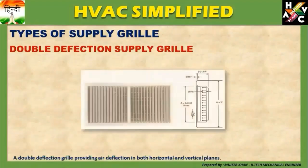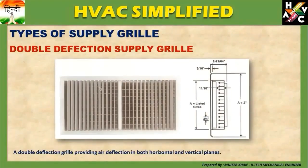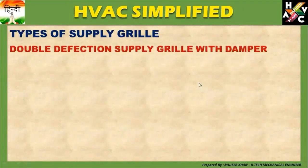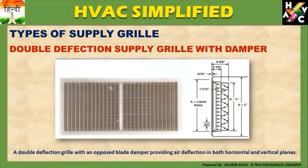Next हमारे होते हैं Double Deflection Supply Grills। A Double Deflection Grill provides a deflection in both horizontal and vertical directions। तो यह हमारे Double Deflection horizontal and vertical Supply Grills होते हैं। Double Deflection Supply Grill with Damper: A Double Deflection Grill with an Opposed Blade Damper provides an air deflection in both horizontal and vertical planes। उसी Double Deflection Supply Air Grill को यहां पर एक Opposed Blade Damper से Connect किया गया है।